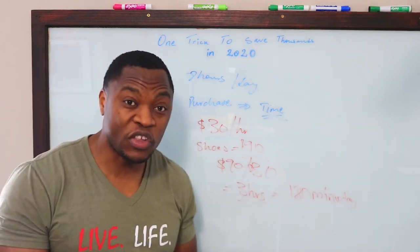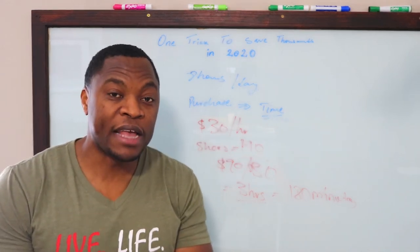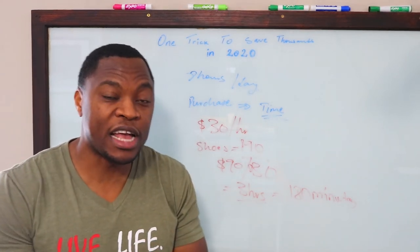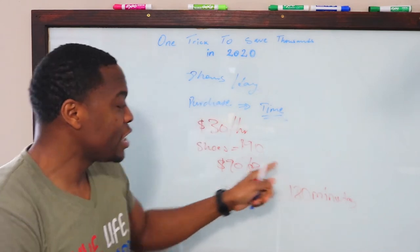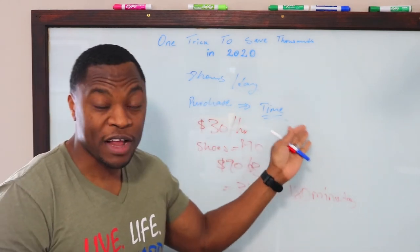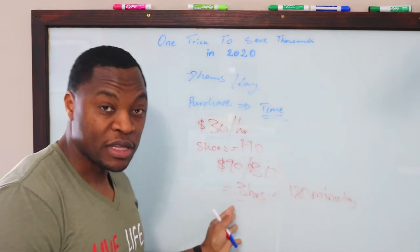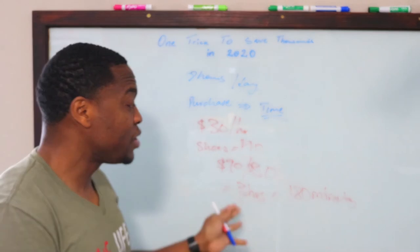And trust me, guys, this is a saving strategy that is going to change the way you do things. So, every expense that you have, if you want to purchase anything, convert it. Take your hourly rate. You divide it by the price of whatever you're buying. That would give you the hours that you spend working to be able to purchase that thing.